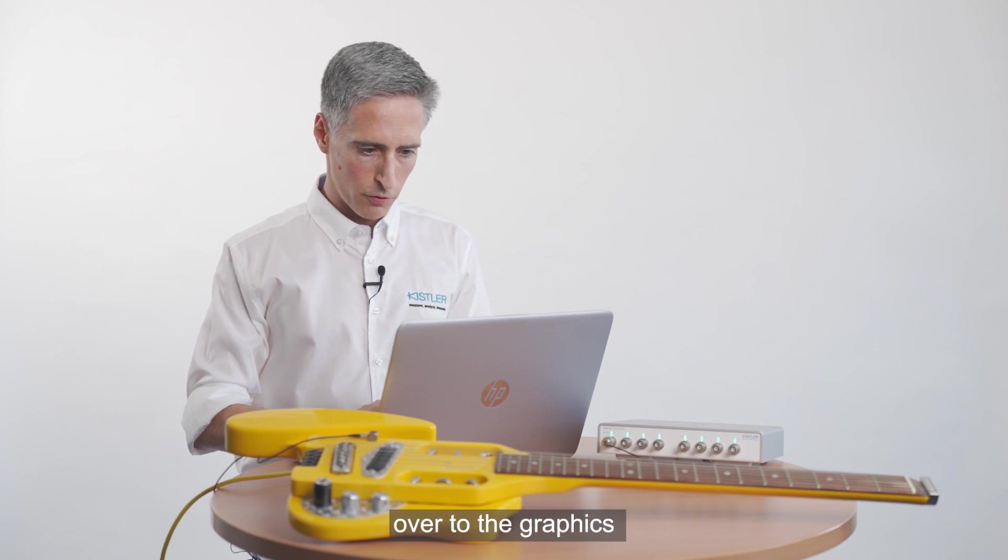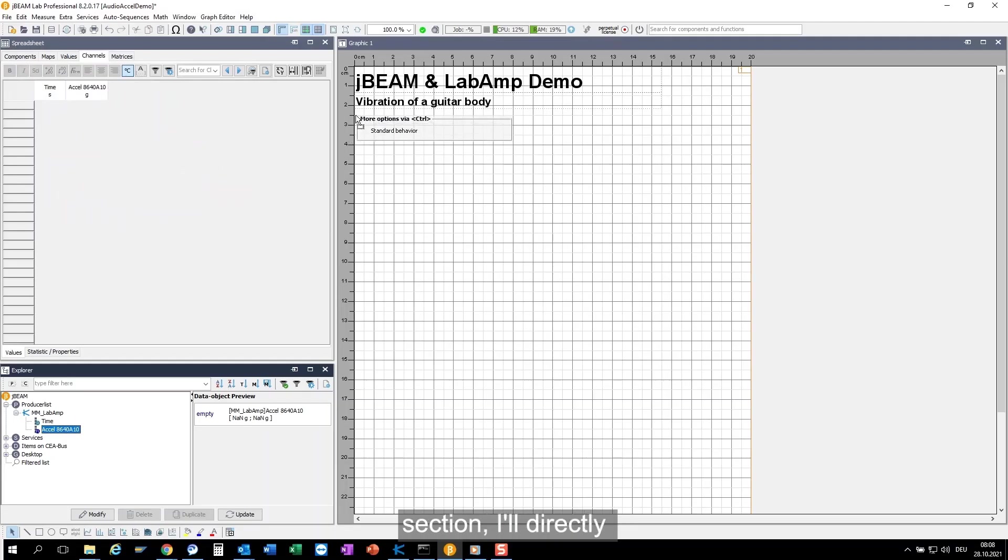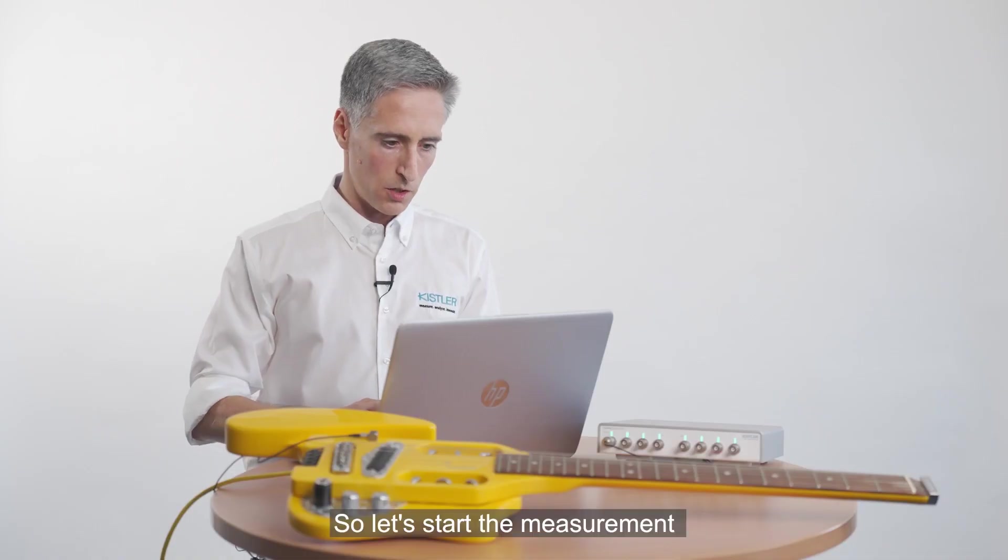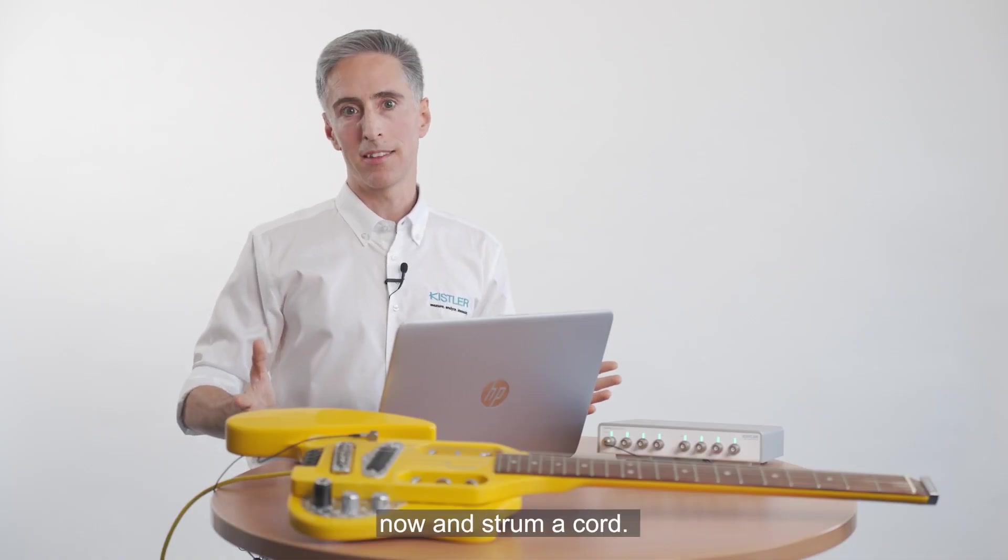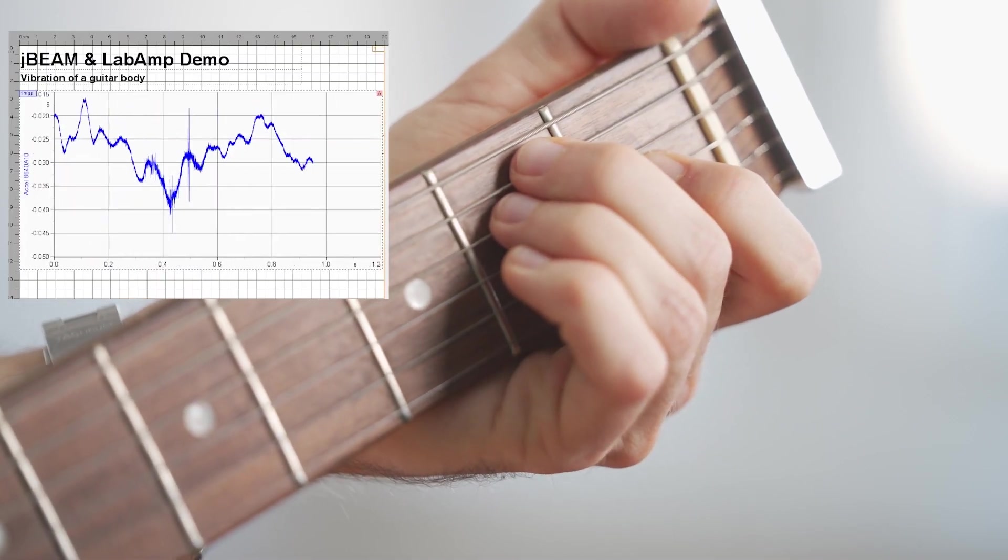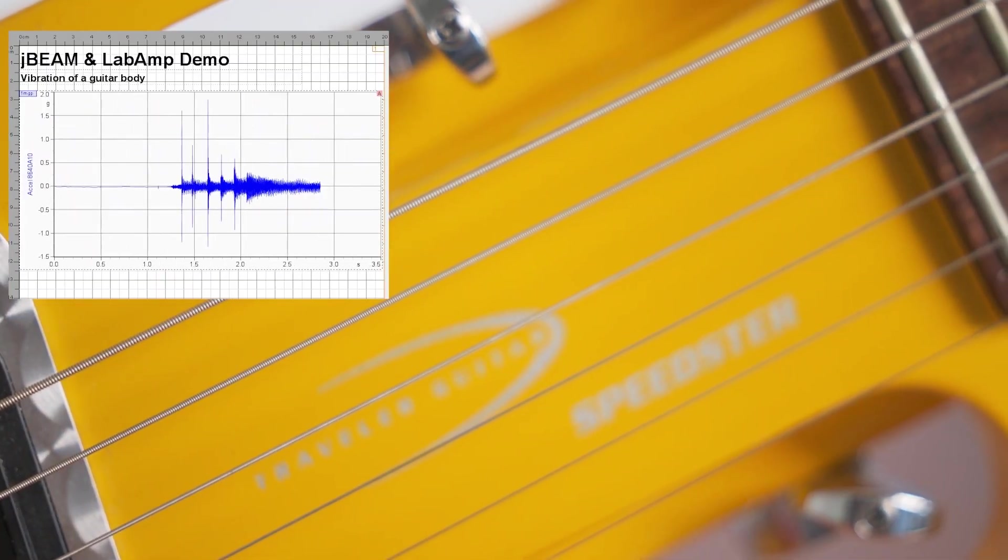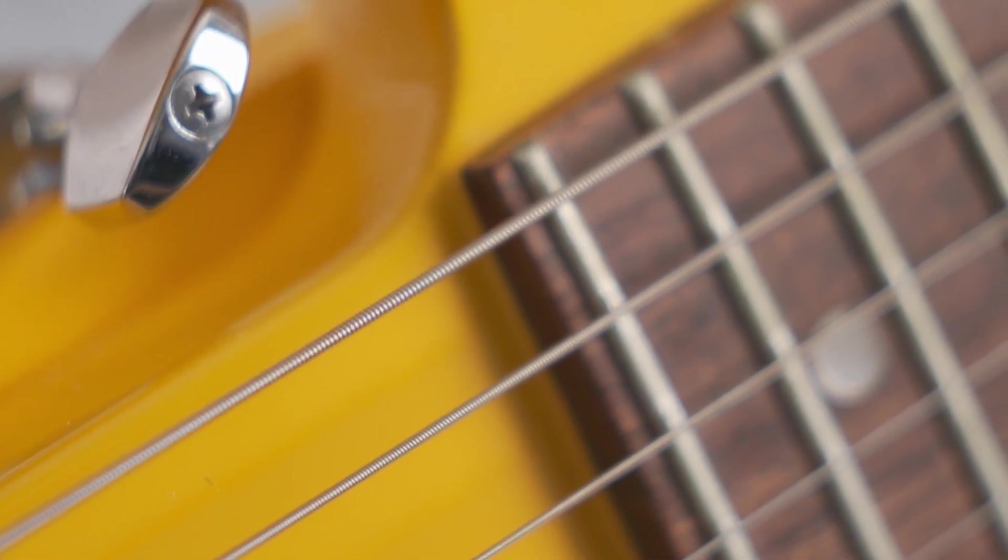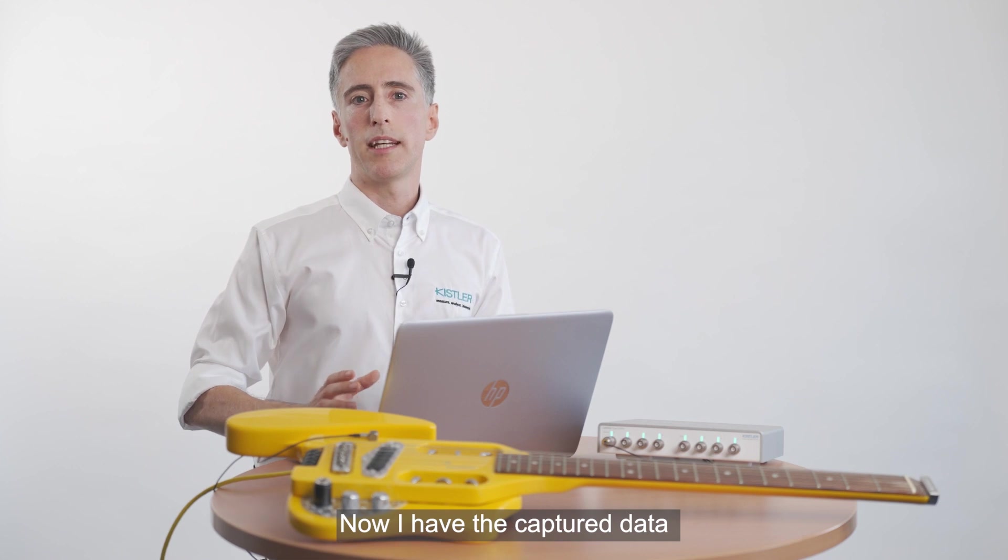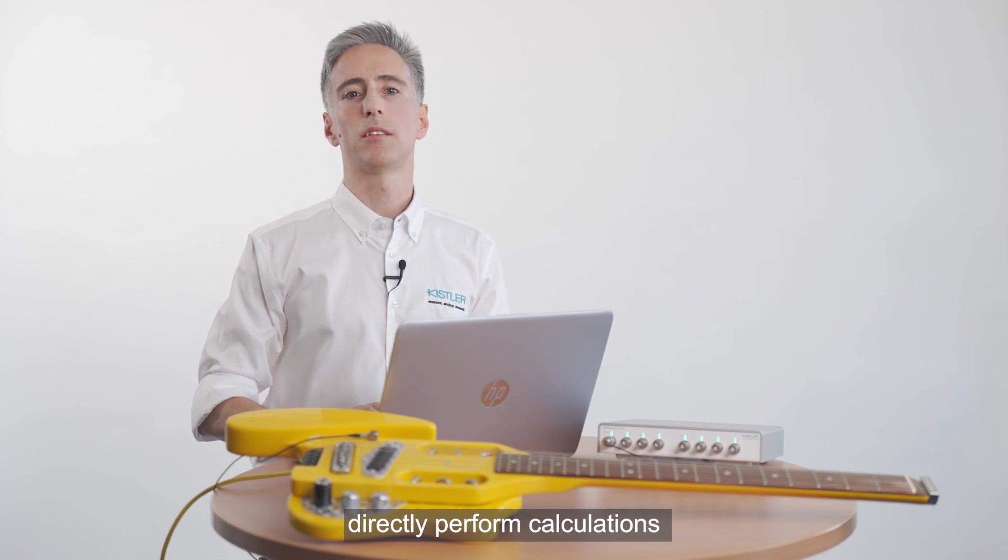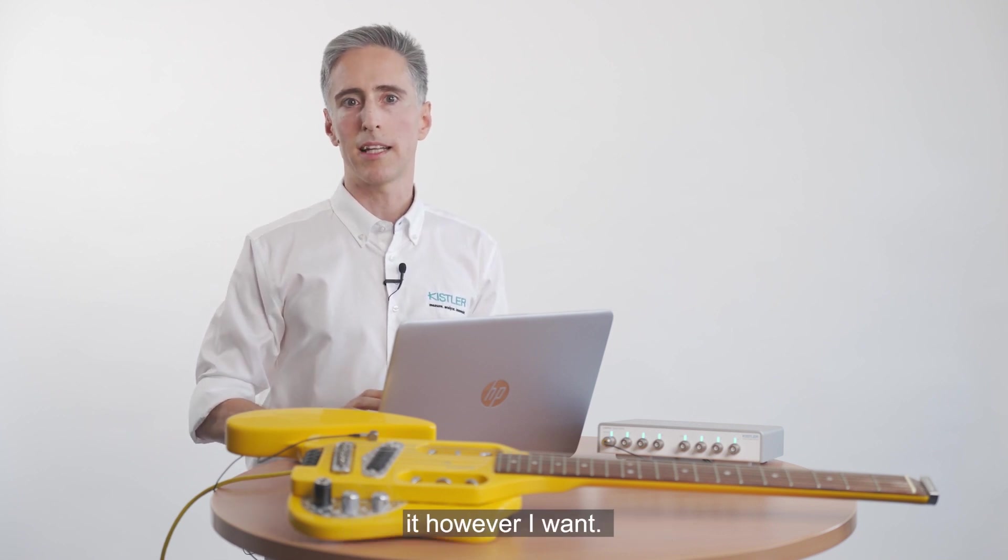When I drag this channel over to the graphics section I'll directly see my signal when I acquire it. So let's start the measurement now and strum a chord. Now I have the captured data in my JBeam project. I can see everything and I can now directly perform calculations with the signal or visualize it however I want.